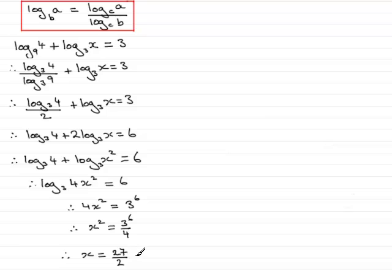So that's one way of solving this equation by converting it to base 3. Now I did say that we could do this again by changing it into base 9. So we'll do that. We'll just copy the question down again. We've got the log of 4 in base 9 plus the log in base 3 of x equals 3. So the first term is OK. That's already in base 9. So we'll just write that down as the log of 4 in base 9. But we need to change this term into base 9.